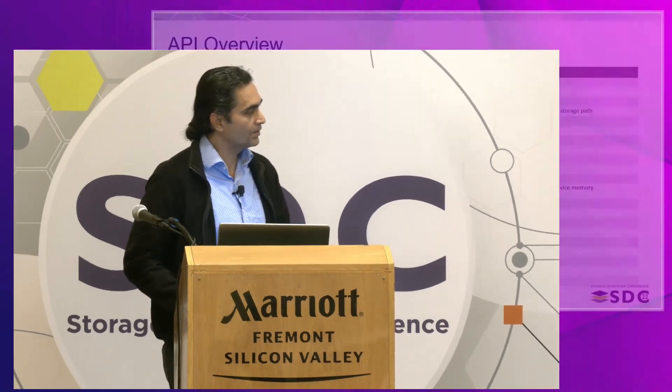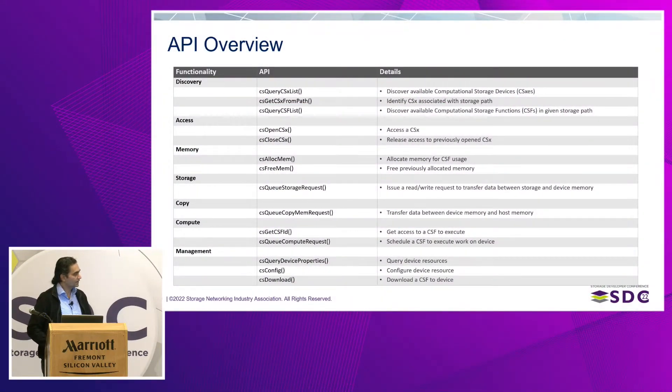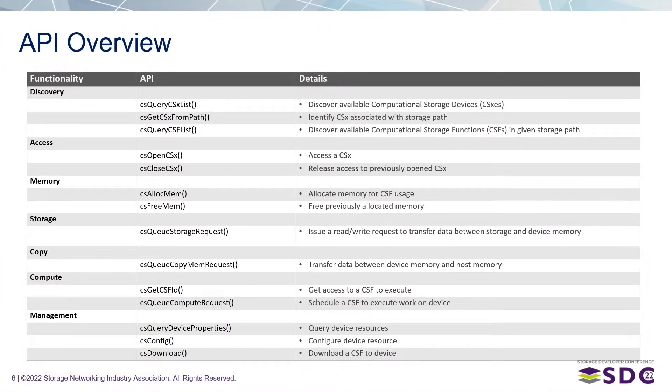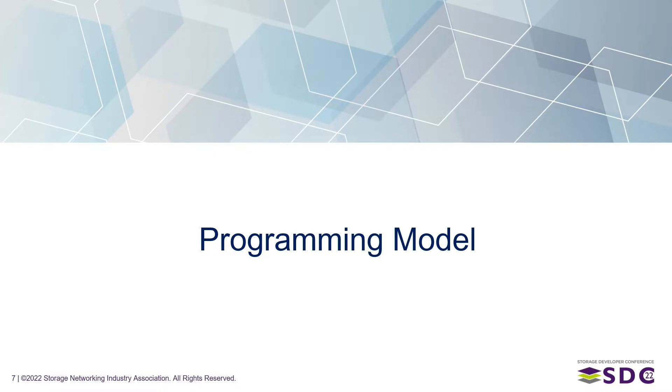We've also defined CSFs to have characteristics where you can choose, if you have more than one CSF of the same type, by its performance or by its power saving — for example, one implemented in a low-power embedded CPU versus one written in an ASIC or FPGA. So you have the choice to discover a CSF by its characteristics and then choose it for your execution, depending on what environment you want. This is a brief overview of the APIs we have defined — not the exhaustive list, but the key ones.